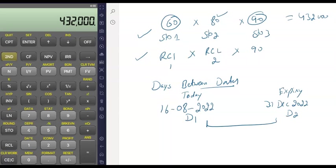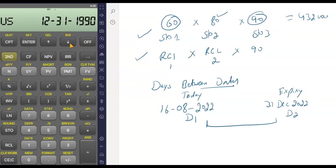Press SECOND and FORMAT, then arrow down twice to reach the date format function. The default is the US format where month appears first, then day, then year. We normally use the European format (day first). To switch, press SECOND and ENTER. Now press ENTER to confirm — the calculator has shifted to European format. Press SECOND and QUIT to exit.